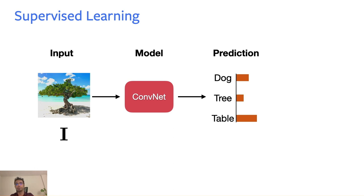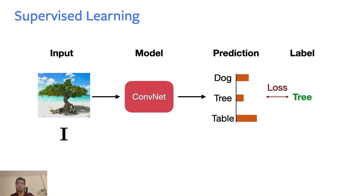In supervised learning, we have an input — in this case, say an image i — and we feed it through a model, for example a ConvNet, that tries to come up with a bunch of predictions. It's trying to recognize what's present in the image, producing scores for concepts like dog, tree, or table. In order to train this model, we need access to labels. Someone labels the image as containing a tree, we compute an error between the model's prediction and the label, giving us a loss to train the model so it can predict correctly next time.